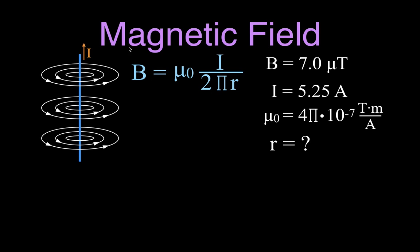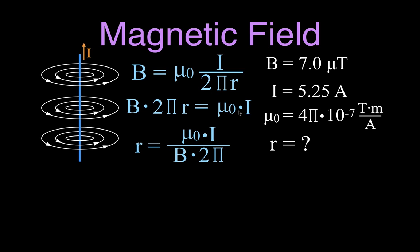We use the same equation again, rearranged to solve for r. Cross-multiplying gives B times 2πr equals μ₀ times I. Dividing both sides by B times 2π gives r equals μ₀ times I, divided by B times 2π — the magnetic field strength times 2π.